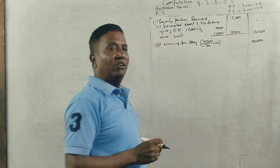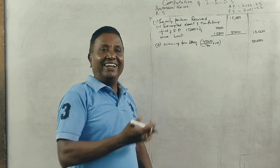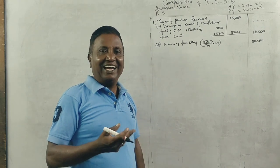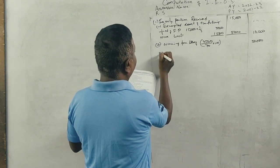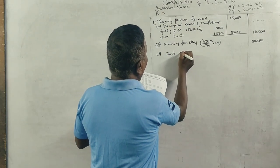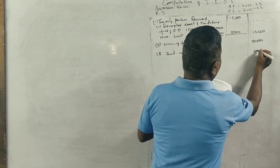Next, interest on fixed deposits. Interest on fixed deposits 5,000, fully taxable.